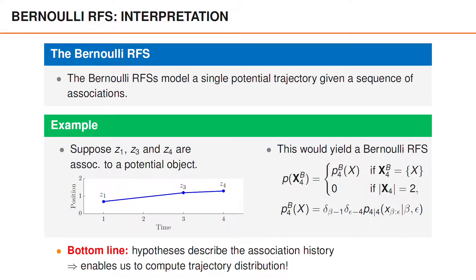The main message here is that since these Bernoulli random finite sets are conditioned on a specific sequence of measurements, it is quite simple to compute their distributions. For instance, computing the distribution P4 given 4 in the above example can be performed using a Kalman filter applied on the vector x_beta to epsilon.